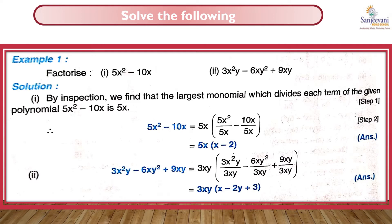So if I solve this, x cancels appropriately: 5x is outside, and inside the bracket we get x - 2. So the two factors of 5x² - 10x are 5x and (x - 2).